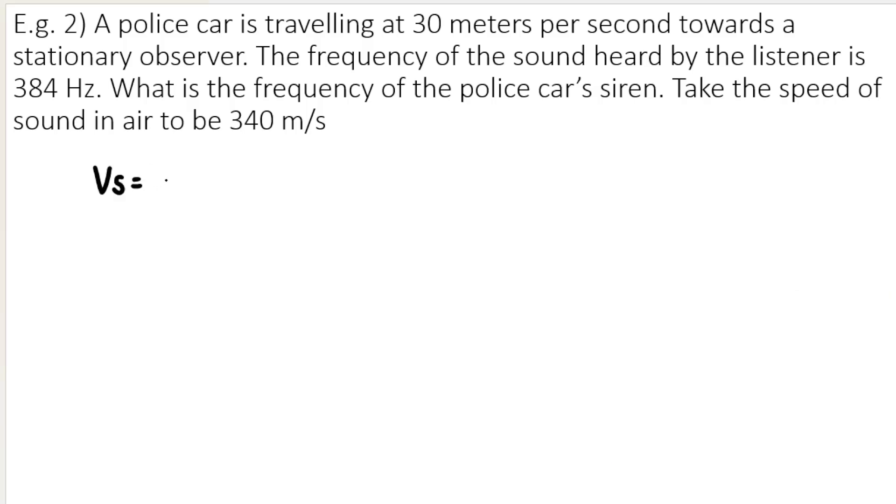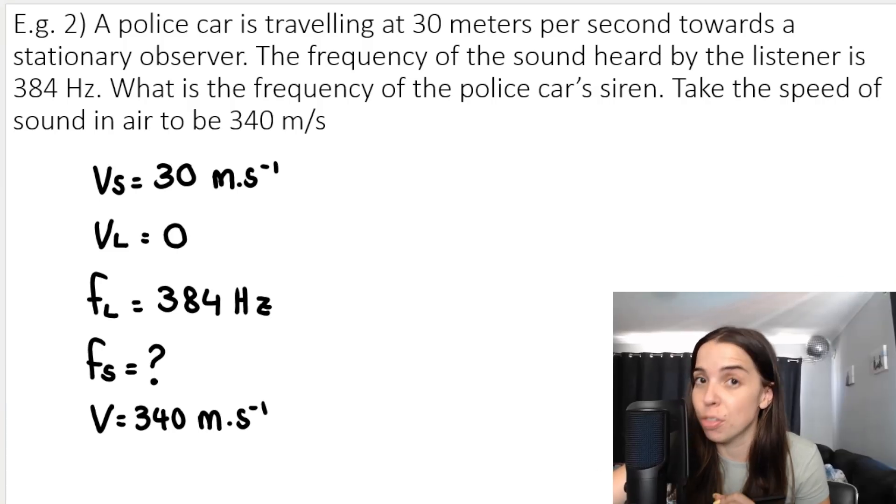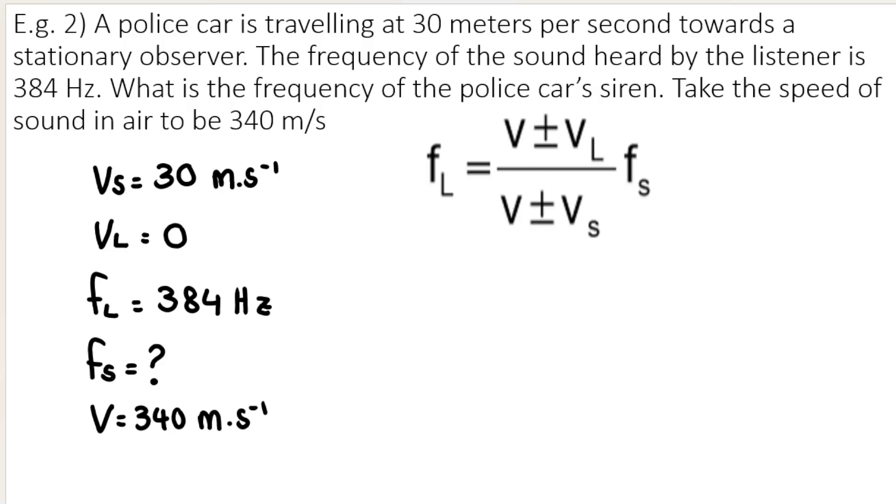So first things first, I'm going to list my variables. They mentioned that the police car is traveling at 30 meters per second, and we know that the observer, the listener is stationary, which means the velocity of that listener is zero. The frequency of the sound heard by the listener is 384 hertz. They want to know the frequency of the police car siren, which would be the frequency of the source. The speed of sound in air is 340 meters per second. So first things first, you need to always write down the equation as it appears on the formula sheet exactly as is.